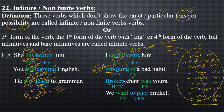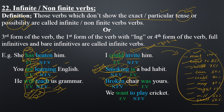'Broken chair was yours' — 'broken' is working as a non-finite verb, specifically as a participle. A participle is when a verb doesn't work as a verb in a sentence but works as an adjective. Here 'broken' modifies the noun 'chair' — which chair? A broken chair. An adjective is a word that modifies a noun or pronoun. So 'broken' is working as an adjective, not as a verb, making it a non-finite verb. 'Was' is your finite verb showing past simple tense.